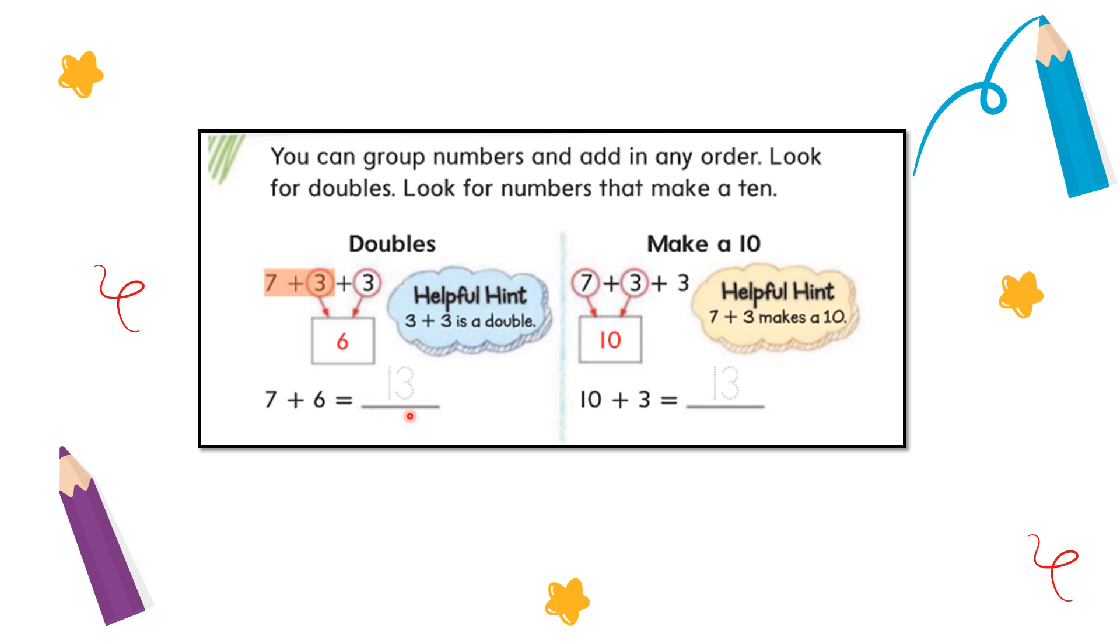...6, which gives me 13. Okay, let's see the other way - make a 10. So here also I have 7 plus 3 plus 3. Let's start with the numbers that make 10, not the doubles. That means 7...